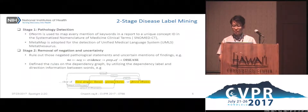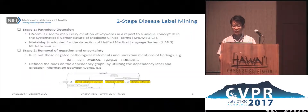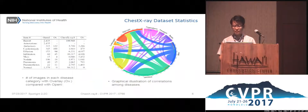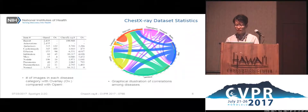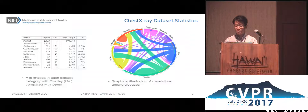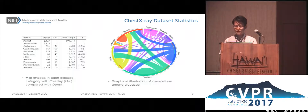A two-stage disease label mining process is used: disease-related keywords are first cursorily detected, and then refined to remove negative and uncertainty expressions. The resulting chest X-ray dataset contains over 100,000 chest X-rays, and each image can be labeled with multiple disease keywords. You can get a better idea from the right-side graph showing how the disease patterns are distributed and correlated.